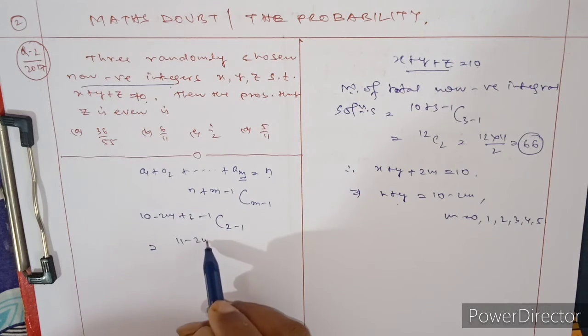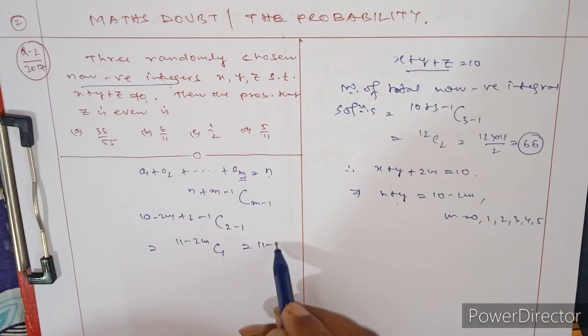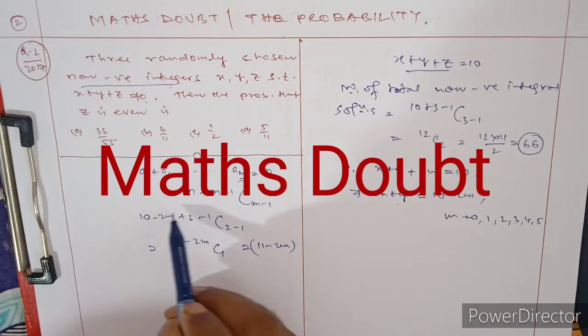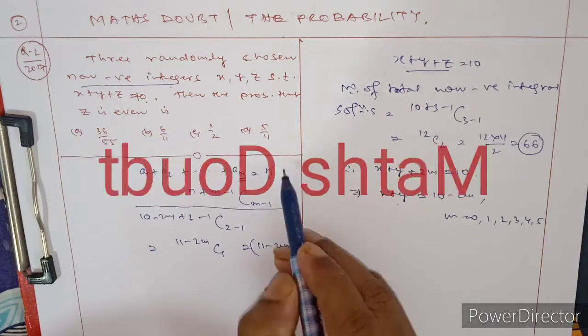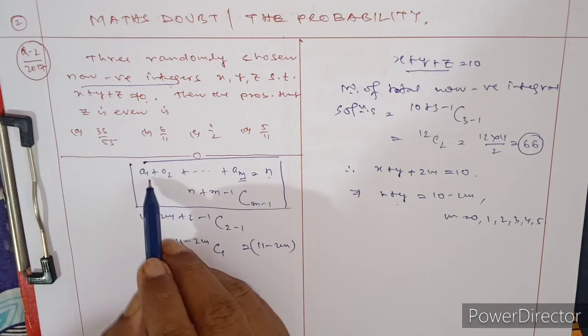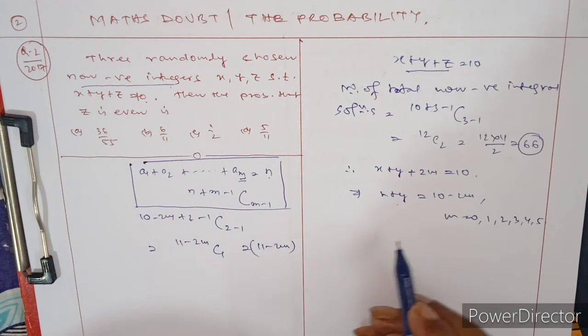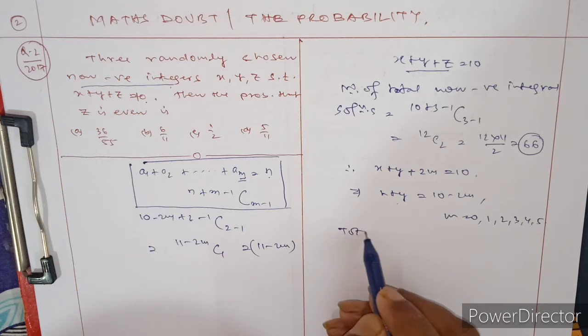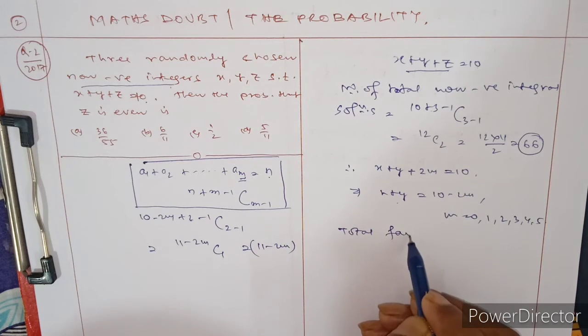This is the standard result you need to remember for non-negative integral solutions. Total favorable cases equal the summation of 11 - 2m.